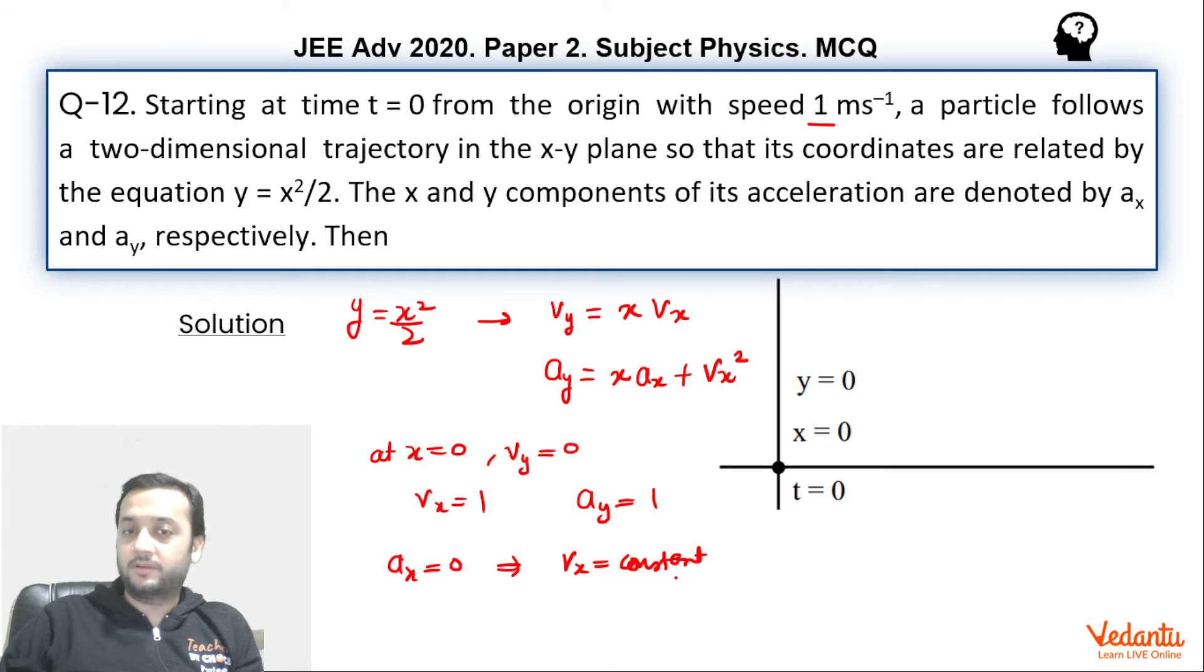So if you put these values in equation number 2, and this is equation number 1, so in equation number 2, if you put ax is 0, so this will become 0 and vx will become 1. So this will become 1. So ay will become 1.